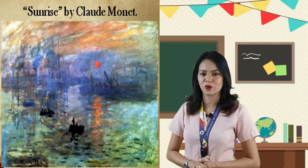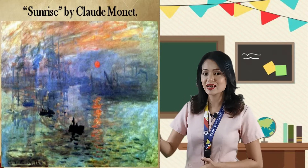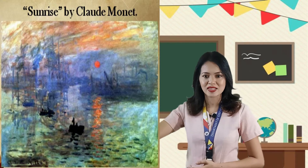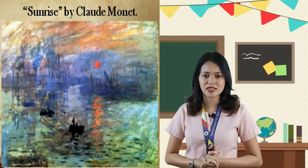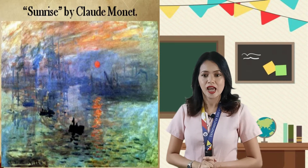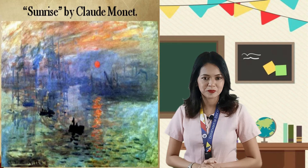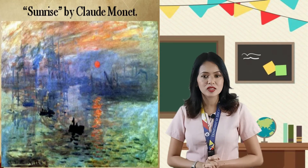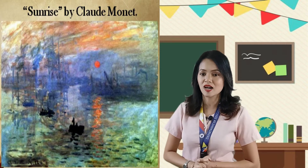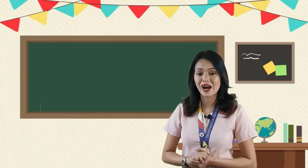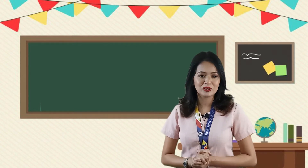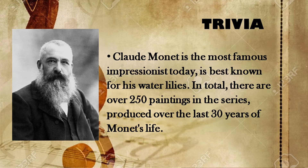Take a look at this wonderful painting. This is one of the impressionist works in the 20th century, and this painting is entitled Sunrise by Claude Monet. There are five images formed in the painting: a boat, human, ship, sun, and sea. By the way, Claude Monet is the most famous impressionist today. He's best known for his water lilies. In total, there are over 250 paintings in the series, produced over the last 30 years of Monet's life.